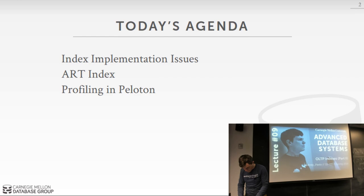For today's agenda, I'm going to start off talking about high-level implementation issues for a concurrent OLAP index. Then we'll spend time on the ART index — the radix tree from the Hyper guys that was in the paper you read. You read the second ART paper; the first described the data structure but was single-threaded. The paper I had you read was about how to make the ART index concurrent. We'll also talk about how to do profiling in Peloton using Valgrind and other tools, which are applicable to other systems as well.